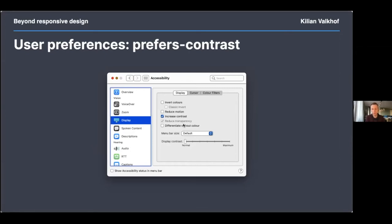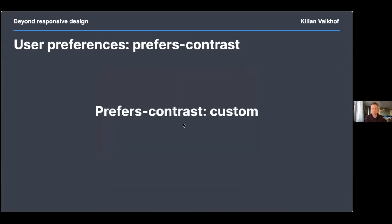I'm not aware of any operating system that can trigger prefers-contrast: less — as far as I know, it's only macOS that has the increased contrast option available. So support is there, but if users can't trigger it, is support really there? If you've been paying attention, you'll notice I skipped prefers-contrast: custom — what does that mean? You don't want more contrast, you don't want less — you want a custom contrast? It doesn't make sense.